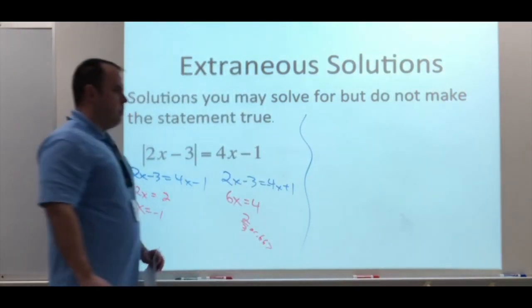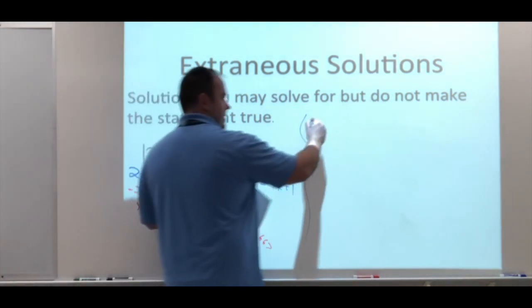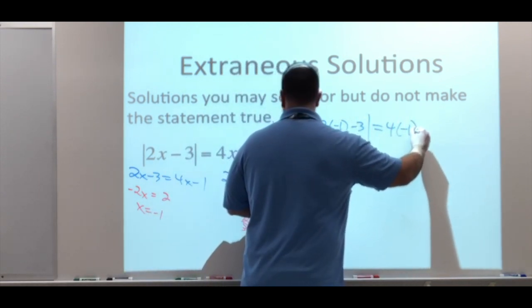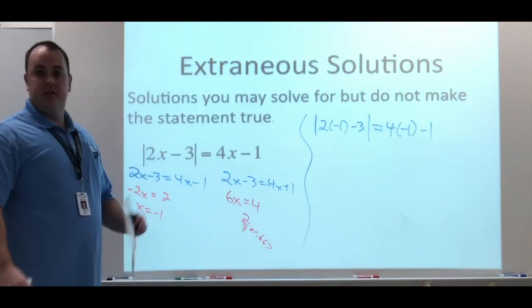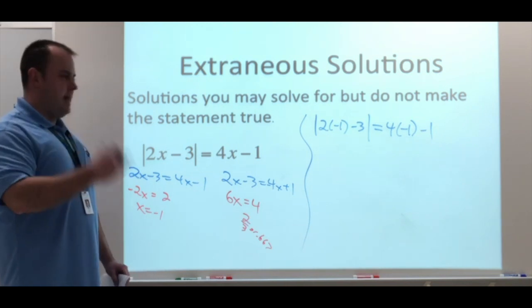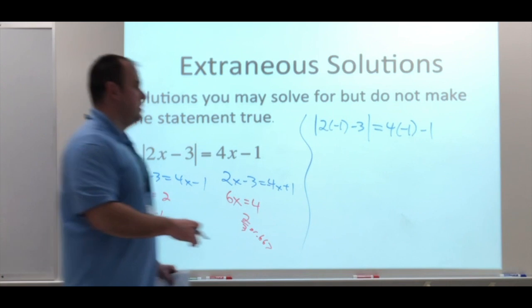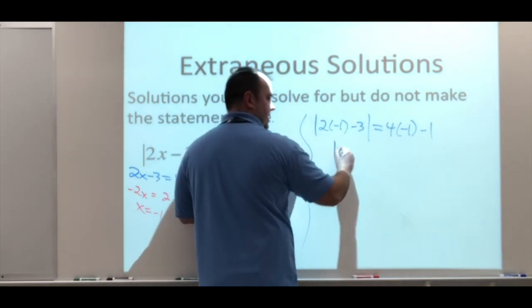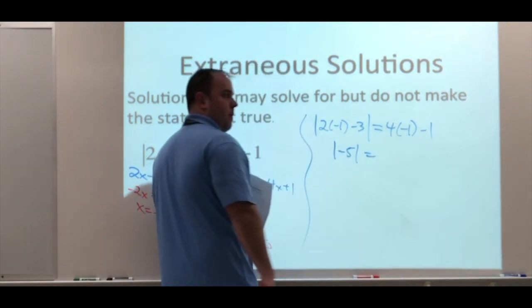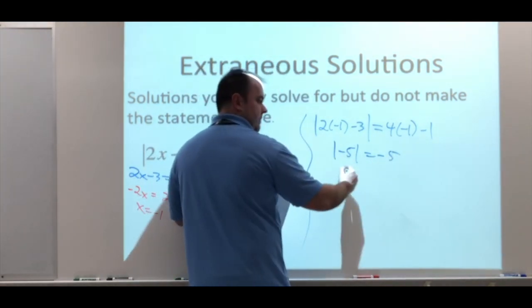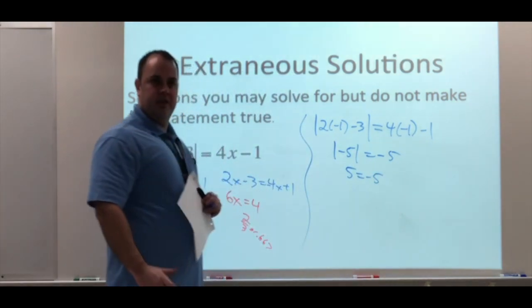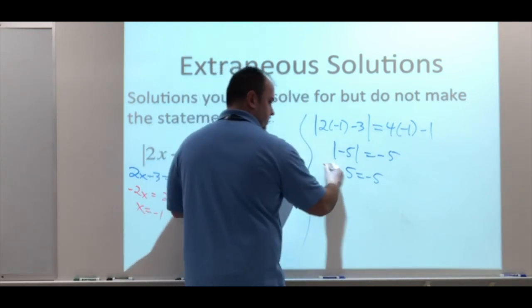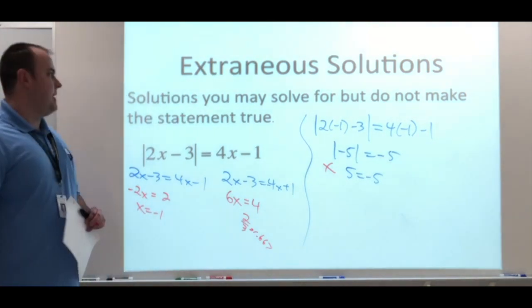I'm going to do my work over here. I'm going to take the negative 1 and plug it in. Absolute value 2 times negative 1 minus 3 equals 4 times negative 1 minus 1. We're just solving both of those. Watch the absolute value. Do the work inside and then make it the positive answer to show the distance. You should get 2 times negative 1 minus 3, which gives us negative 5. On the other side, negative 4 minus 1 gives us negative 5. Absolute value negative 5 is positive 5. This is not a true statement. 5 does not equal negative 5. So this is not true, which means that x equals negative 1, that's an extraneous solution.